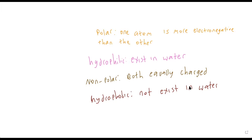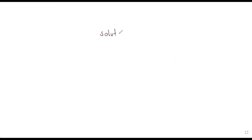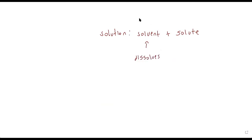Moving on to solutions. A solution is a combination of a solute and a solvent. The solvent is usually water, and the solute is something that is dissolved in water. The solvent dissolves the compound, and the solute is dissolved. These are normally things that are polar or ionically bonded.